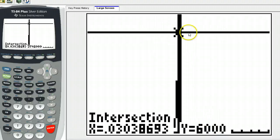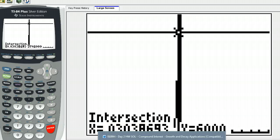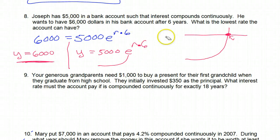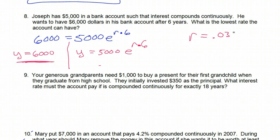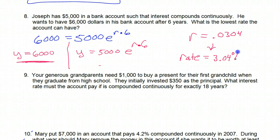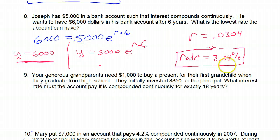The Y value is 6,000, as we knew. But the X value is the rate. I've got 0.0304 — rounding to 0.0304 because the next number is 8. So the R value is 0.0304. Now turning this back into a percent, that means the interest rate is 3.04%. That's how you find the lowest interest rate to turn $5,000 into $6,000 over a six-year period.